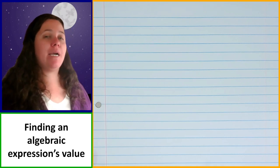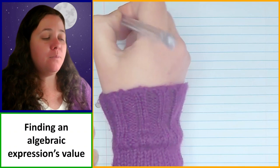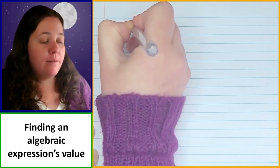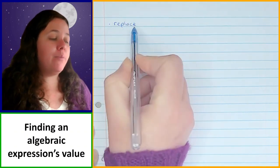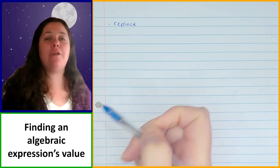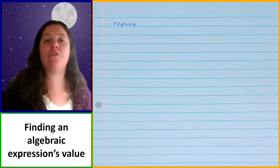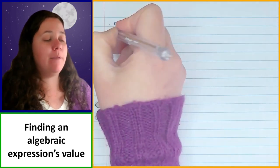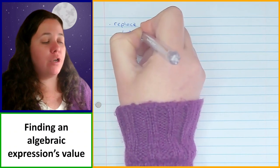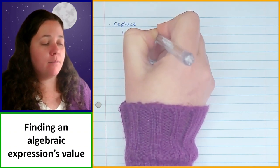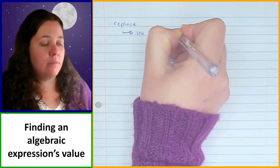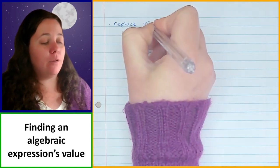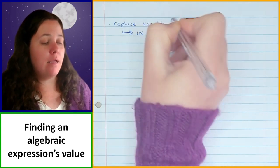Just to remind you about the process: when you are substituting, you first are going to be replacing the variable with the value that you are given. If you have two variables or three variables, you'll replace each of the variables with the values that you have been given. And remember, when you are doing that, you have to put it in brackets — that is super important. If you don't put it in brackets, you're going to end up with problems.